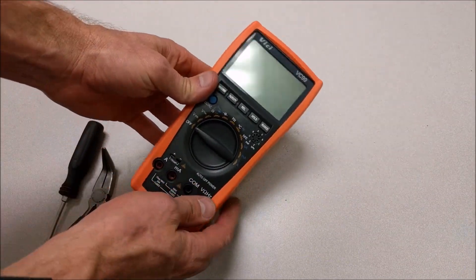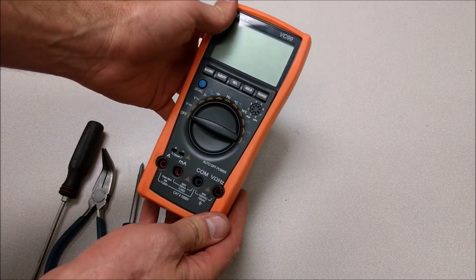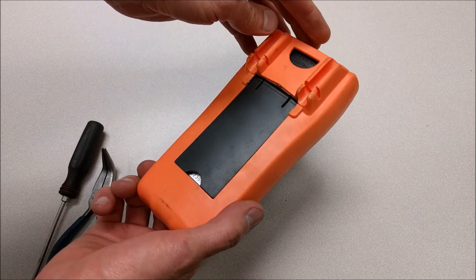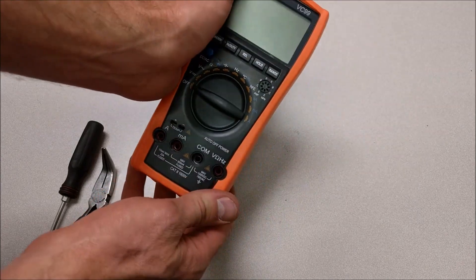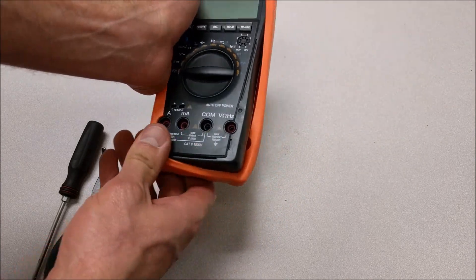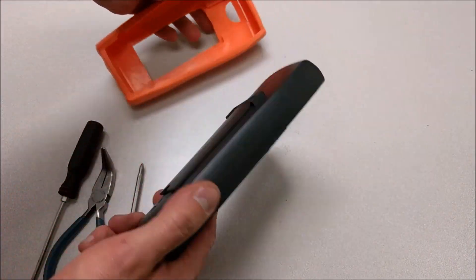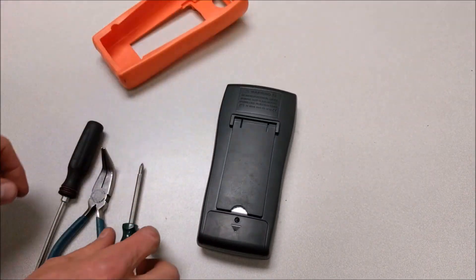Let's change the fuse in the VC99. This VC99 is a cheaper meter, but in my opinion, for the price, which is usually around $30, it's actually a pretty good little meter. You'll see it is built a lot more cheaply than the others, but it's a decent meter for the price.